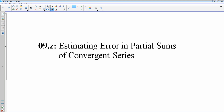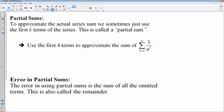We're going to look at a different aspect of convergent series. What we're going to do here is learn how to estimate the error in using partial sums. We're not going to learn any new convergence tests. A partial sum is simply using the first so many terms to estimate a sum.